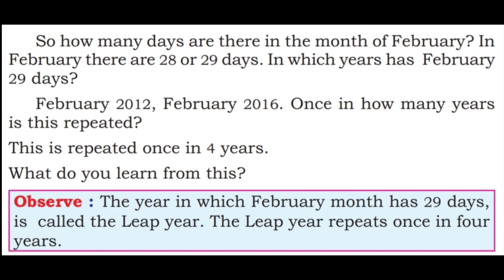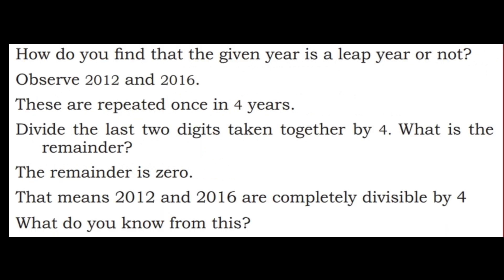This is repeated once in 4 years. The year in which February month has 29 days is called the leap year. The leap year repeats once in 4 years. In that year, February has 29 days — that year is called a leap year or Adhika Varsha — one extra day. How do you find whether the given year is a leap year or not?